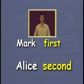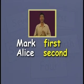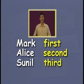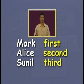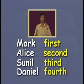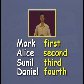My sister Alice, who is number two, is the second child. I'm number three, so I'm the third child. And my younger brother Daniel, who is number four in the family, is the fourth child.